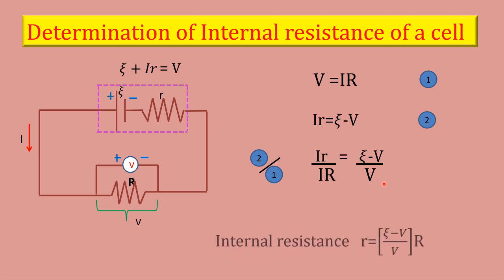And so, what is the internal resistance? Smaller r, that is equal to (psi - V) divided by V into R. So, the internal resistance r will be equal to (psi - V) divided by V into capital R.